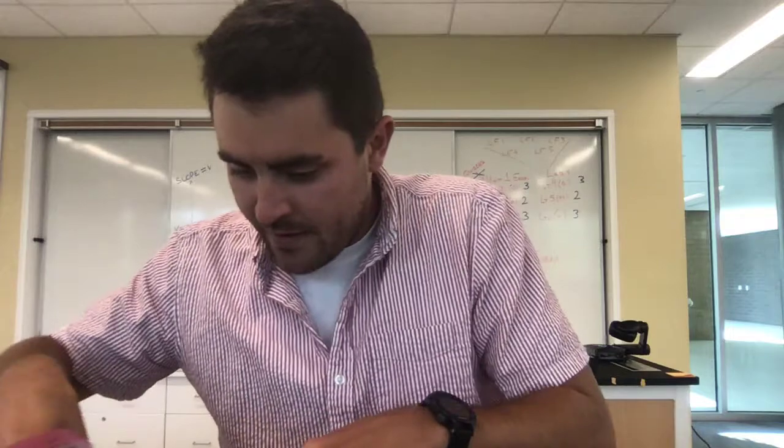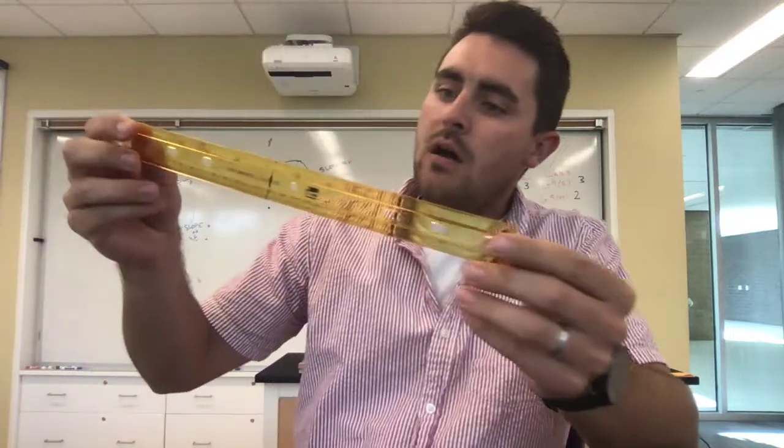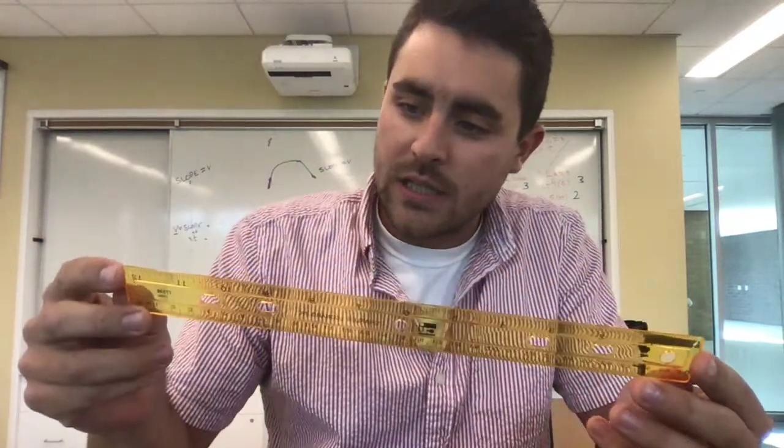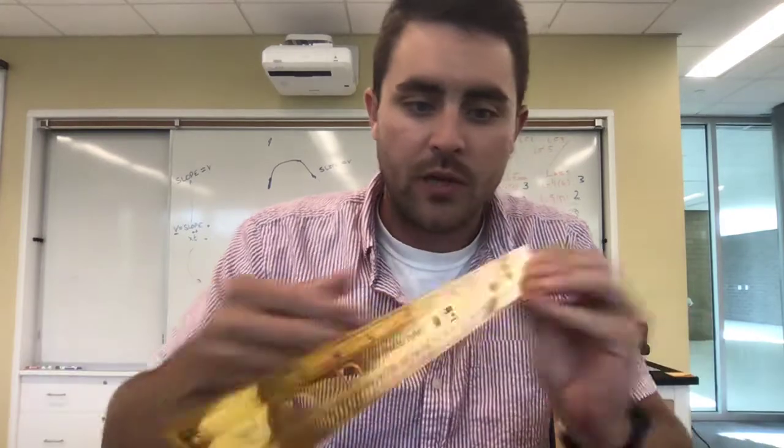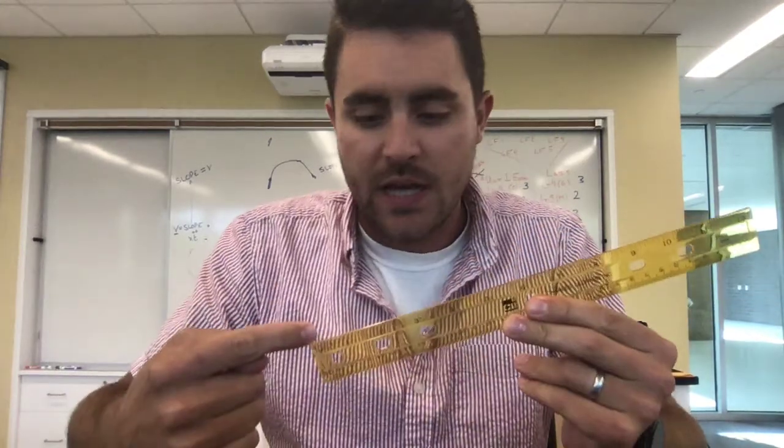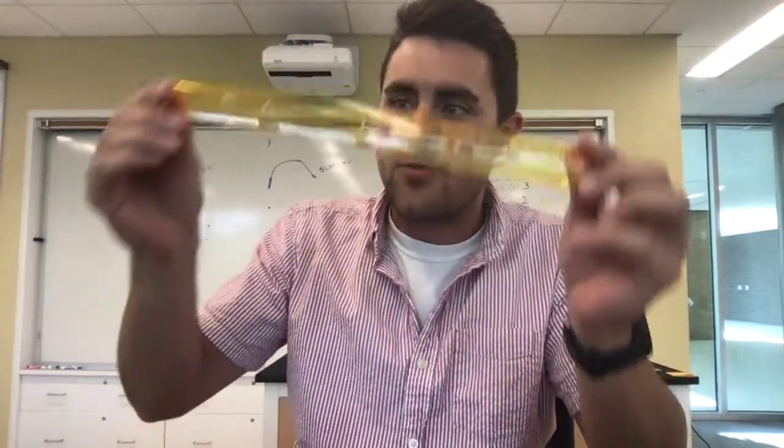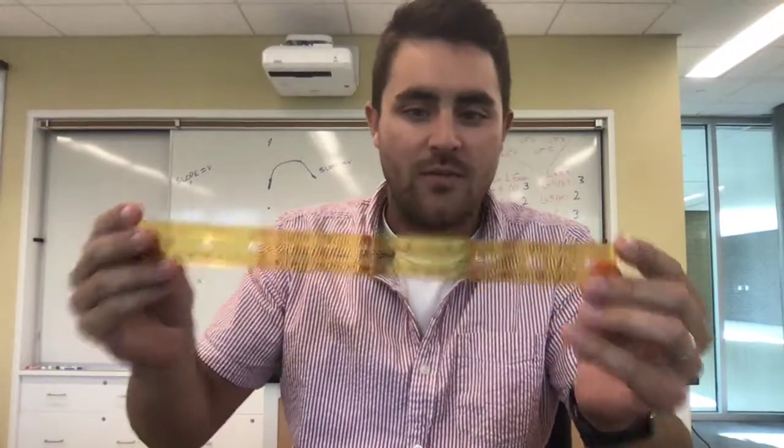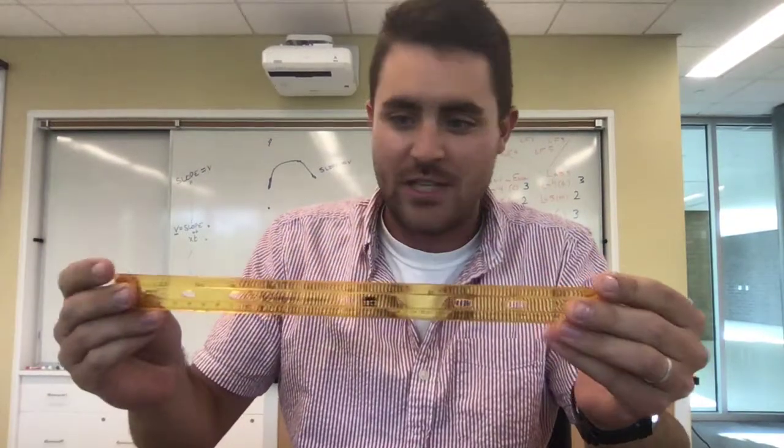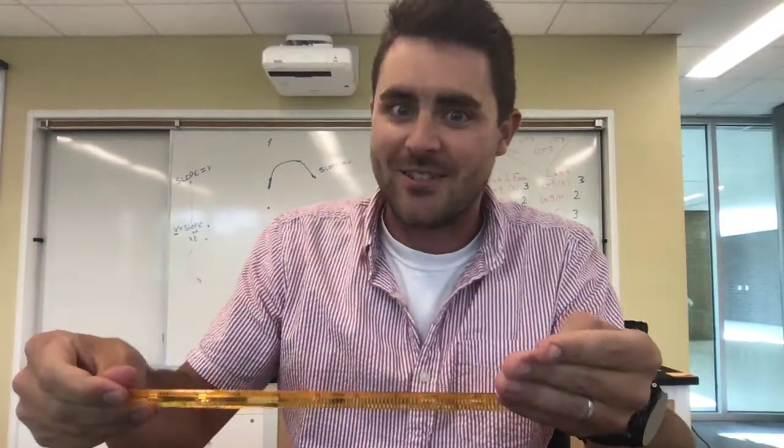I also have in here a Charles Leonard Incorporated ruler. It has 12 inches on one side. We're not going to use inches. It has 30 centimeters on the other side. Mine is a see-through yellow color. Wow. Thank you so much AP Physics 1 teachers from Stevenson. This is awesome.